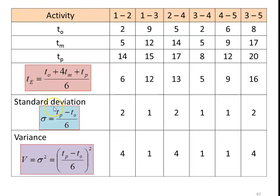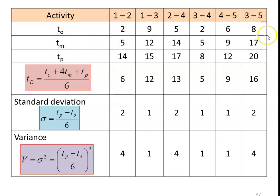First we calculate the various parameters: expected time, standard deviation, and variance of the activities. The activities are 1 to 2, 1 to 3, 2 to 4, 3 to 4, 4 to 5, and 3 to 5. The TO, TM, TP values are taken from the problem. The expected time TE is equal to (TO + 4TM + TP) divided by 6.